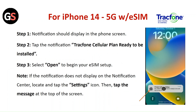For iPhone 14 5G eSIM. Step 1: a notification should display on the phone screen. Step 2: tap on the notification — Tracfone's alert will show the plan is ready to be installed. Step 3: select Open to begin your eSIM setup. Note: if the notification does not display in the notification center, locate and tap the screen icon, then tap on the message at the top of the screen.